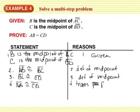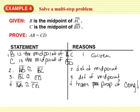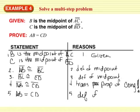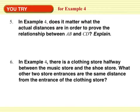Because of the transitive property of congruence, we can say that AB is equal to CD — definition of congruent segments. We did it! Yahoo!